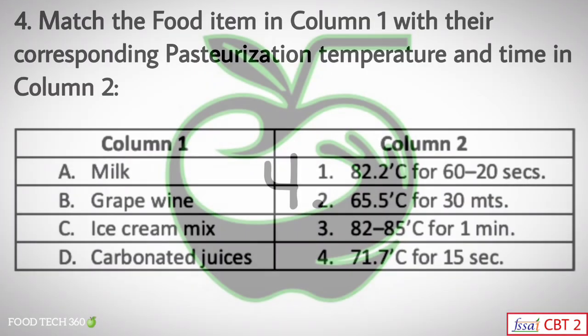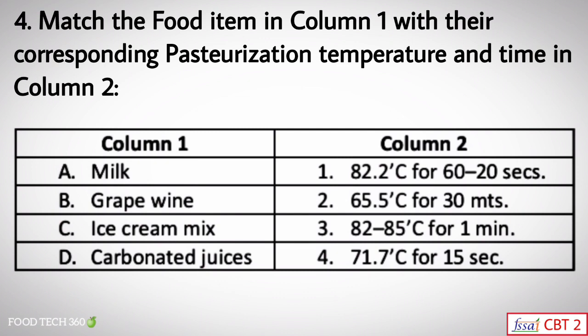Question number four: match the food item in column one with their corresponding pasteurization temperature and time in column two. Column one contains food items such as milk, grapevine, ice cream mix, and carbonated juices. Milk has a pasteurization temperature and time of 71.7°C for 15 seconds.